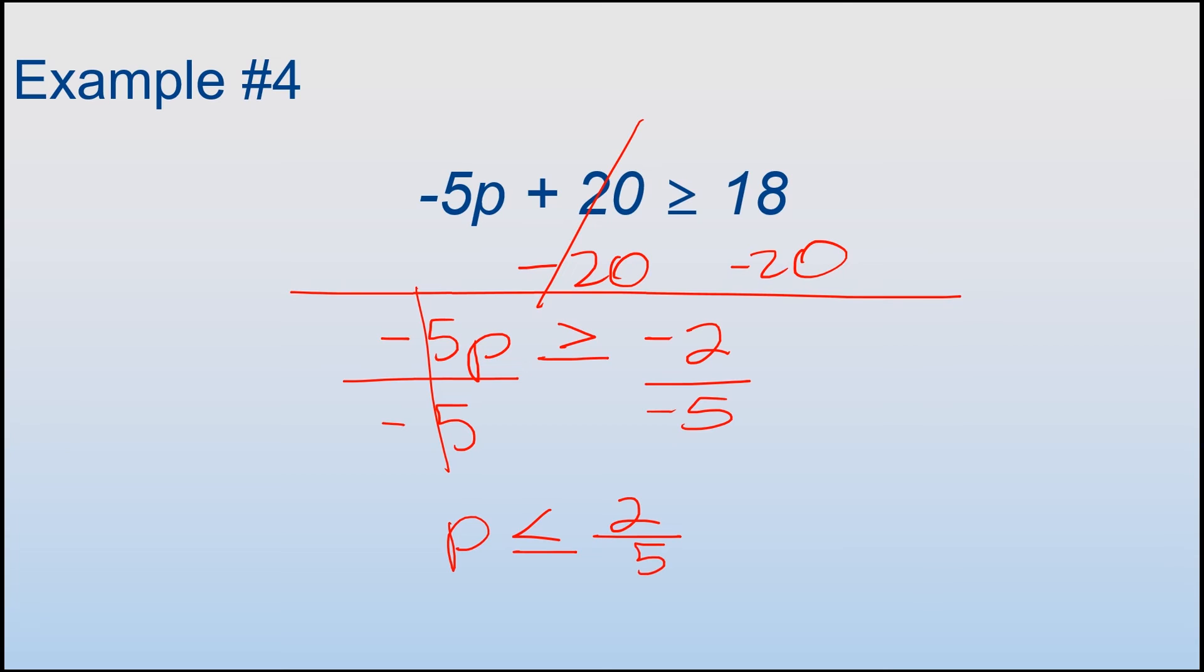Whenever we have a fraction in both the numerator and the denominator are negative, that is the same thing as having both positives. So, I don't want to write them again, because it looks a little more cluttered. I also want to point out that it's okay to have a fraction as your answer. If that's what you end up with, that's totally fine. So, the answer to example number 4 is p ≤ 2/5.